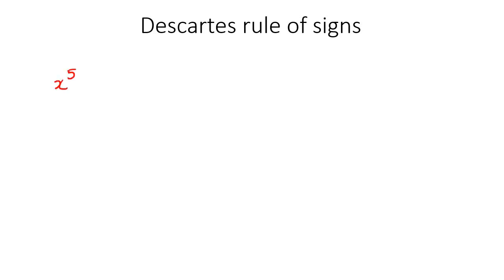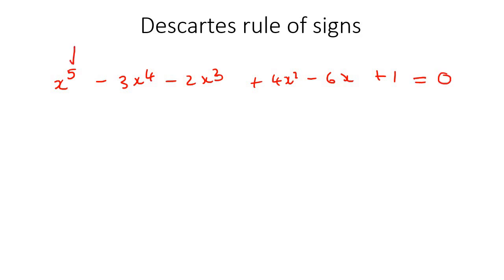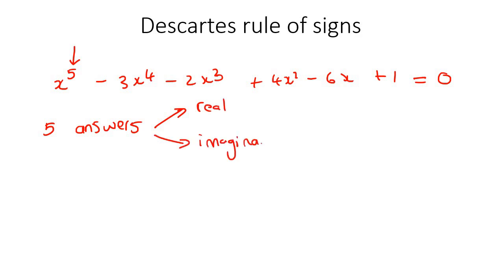So, if I give you a question like x to the power of 5 minus 3x to the power of 4 minus 2x cubed plus 4x squared minus 6x plus 1, maybe you've heard your teacher talk about the fundamental theorem of algebra. What that tells us is that if this was an equation, then because this has a highest power of 5, there should be 5 answers. But some of those answers are going to be real, and some of those answers might be imaginary, or complex.